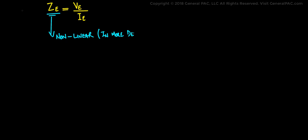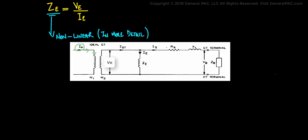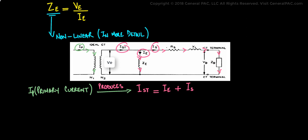Now we also have a primary current IP that flows through the primary winding of a current transformer. This IP value produces a total secondary current on the secondary side of the winding. And in mathematical terms, we can represent this parameter using the following equation. IST is equal to IE plus IS, where IE is the excitation current and IS is the secondary current flowing through the winding and flowing to the secondary CT burden.